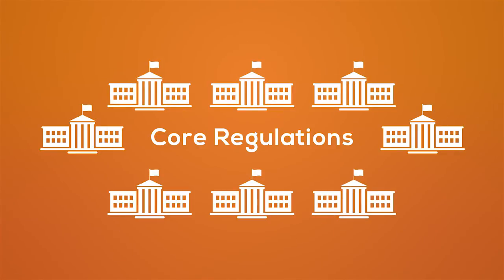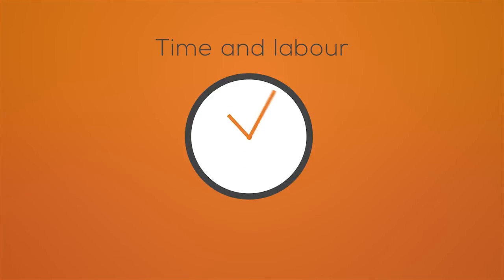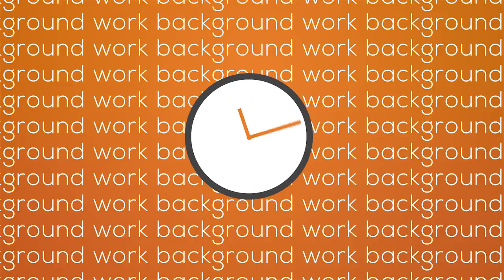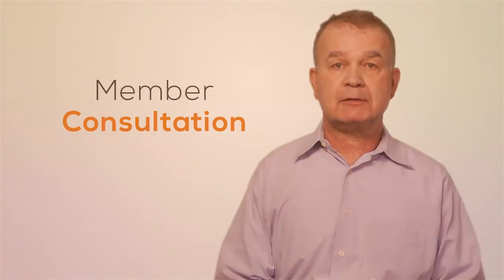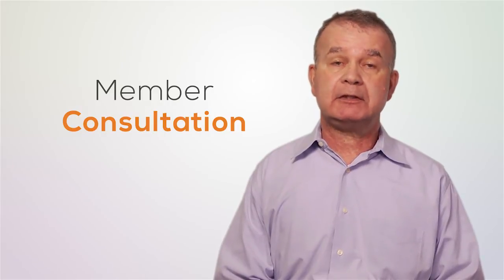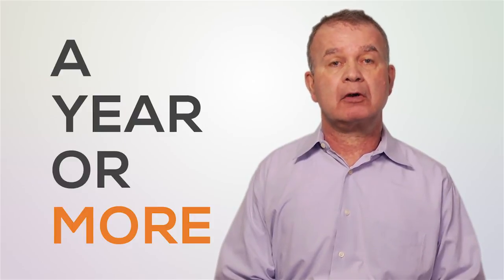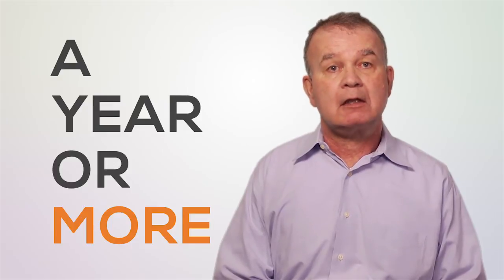Colleges often concentrate on core regulations because of the difficulties associated with making regulations. The process can be time and labour intensive. Colleges must do the background work, distribute consultation documents to members for comment, incorporate these comments, consider the regulation at council, and then submit the regulation for government approval. Member consultation is a critical aspect of self-regulation. Once a regulation has been submitted to government, it can often take a year or more for the regulation to be considered for approval. The delays associated with regulation development and approval mean that sometimes the regulations are out of date by the time the process is complete. Because of this, some colleges turn to alternative rule-making authorities to ensure that their rules are as current as possible, including using standards and guidelines.